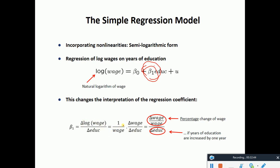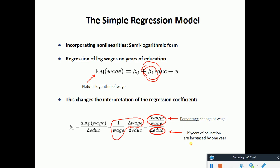The change in log wage with change in education equals 1/wage times the change in wage, divided by the change in education. So one unit increase of education corresponds to a percent change in wage. For example, if log(wage) = 5 + 2·education + u, then one year increase in education corresponds to a 2% increase in wage because the coefficient is 2 and it's in log-linear form.